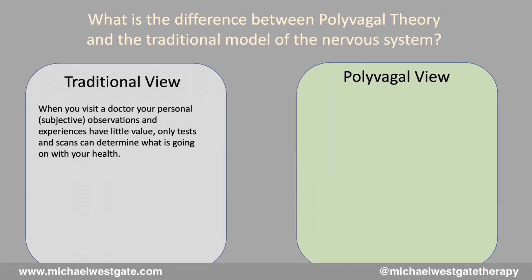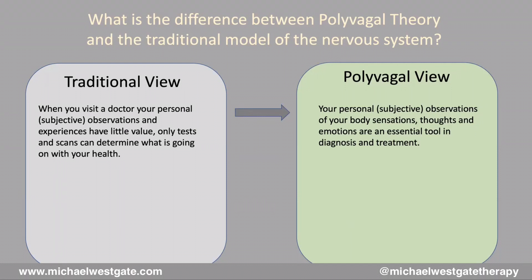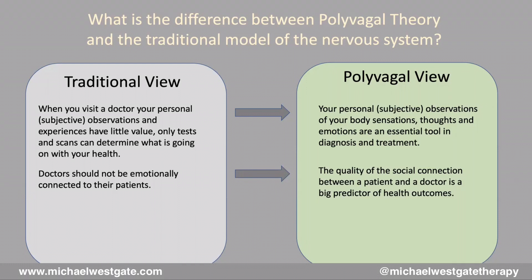Here's a big one. When you visit your doctor, in the traditional view your personal, subjective observations and experiences have little — usually no — value, and only tests and scans can determine what's going on with your health. In the polyvagal view, your subjective observations, body sensations, thoughts, and emotions are one of the most important tools in diagnosing and treating stress-related disorders. Also, doctors are traditionally taught not to be emotionally connected to their patients, whereas polyvagal research by Dr. Porges suggests the quality of social connection between patient and practitioner accounts for up to 50% of why someone gets well.